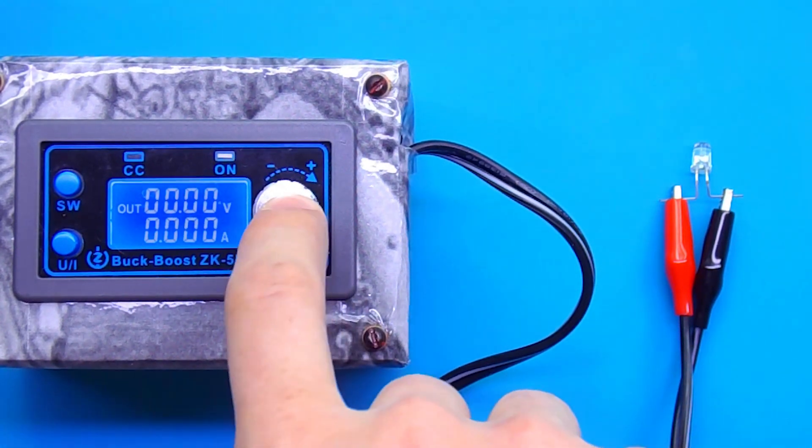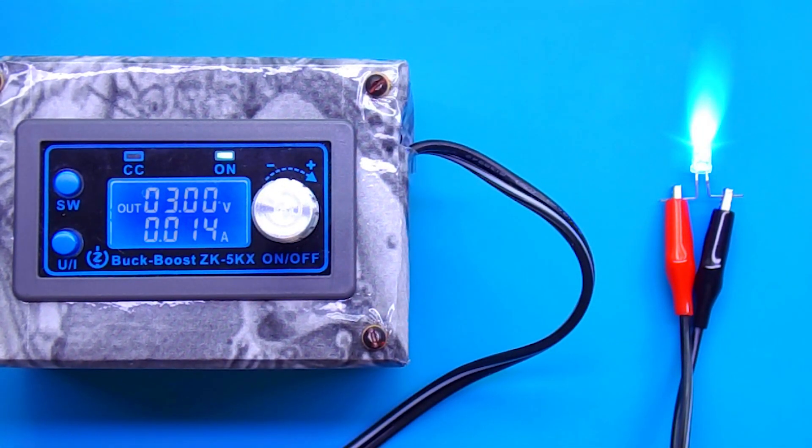Information about how much current an LED consumes can be found on the internet, or you can measure it yourself. From the power supply, I now applied 3 volts, and it turned out that the LED consumes 13 milliamps.